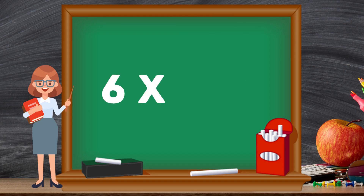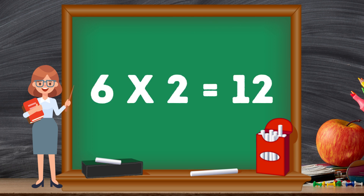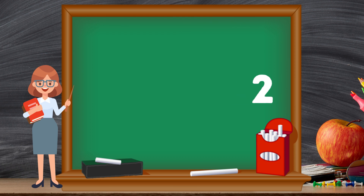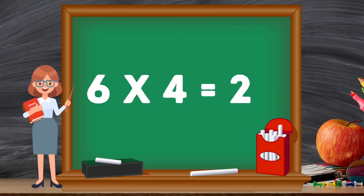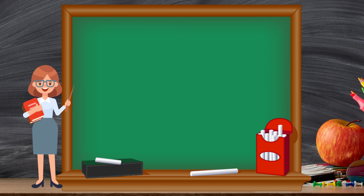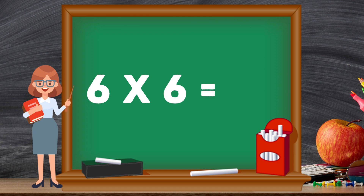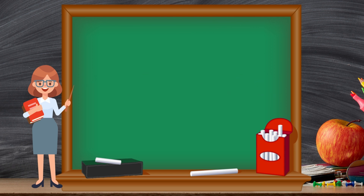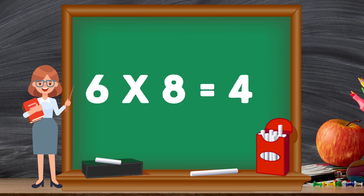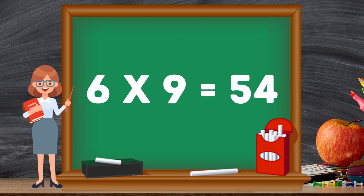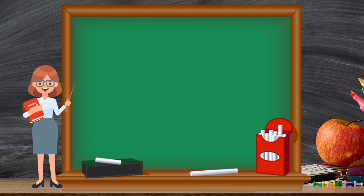6 ones are 6. 6 twos are 12. 6 threes are 18. 6 fours are 24. 6 fives are 30. 6 sixes are 36. 6 sevens are 42. 6 eights are 48. 6 nines are 54. 6 tens are 60.